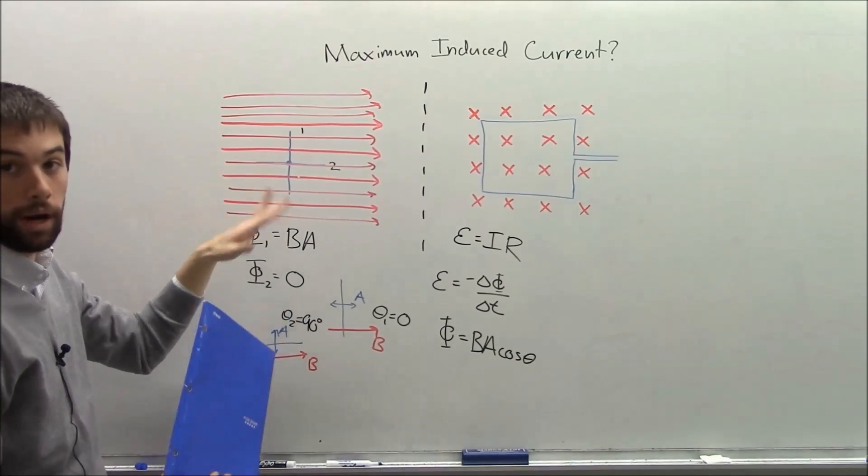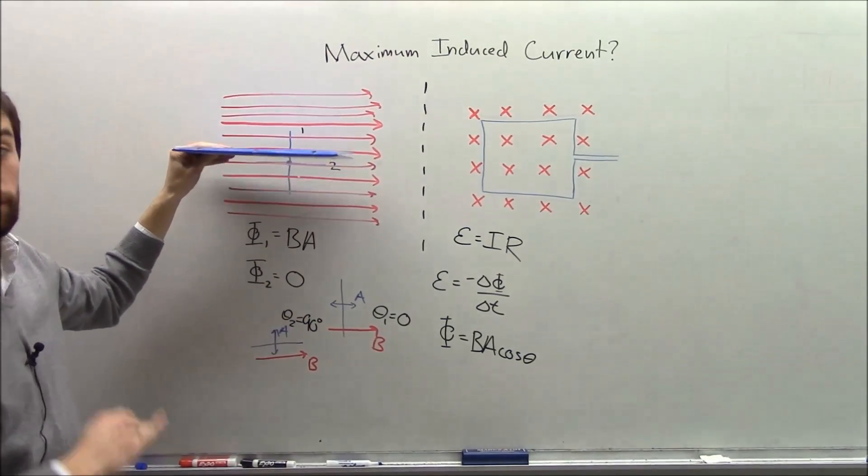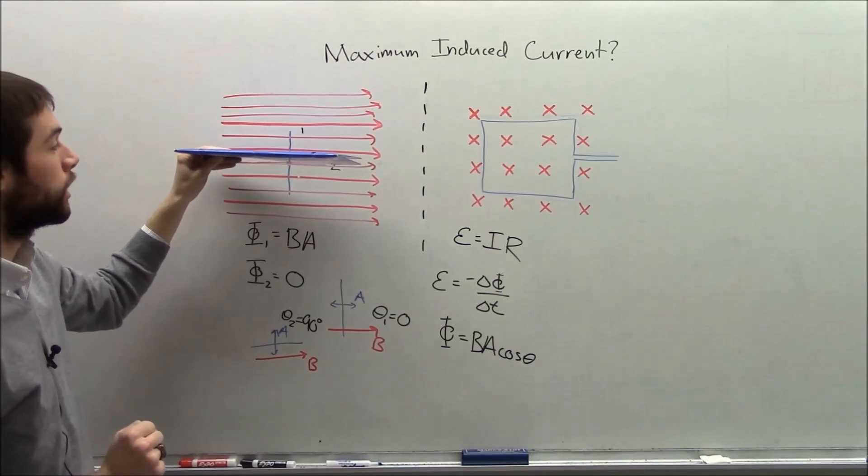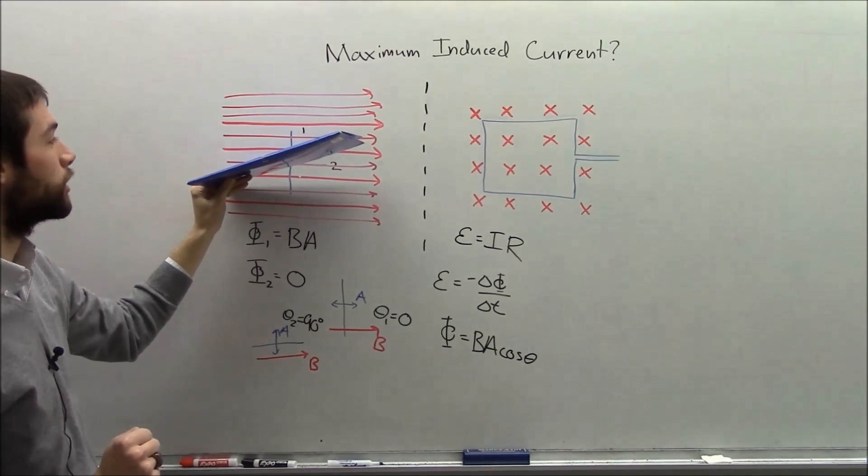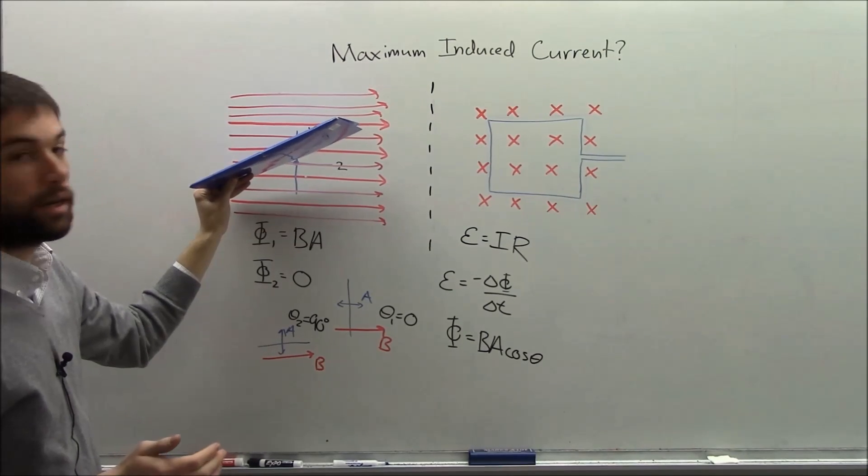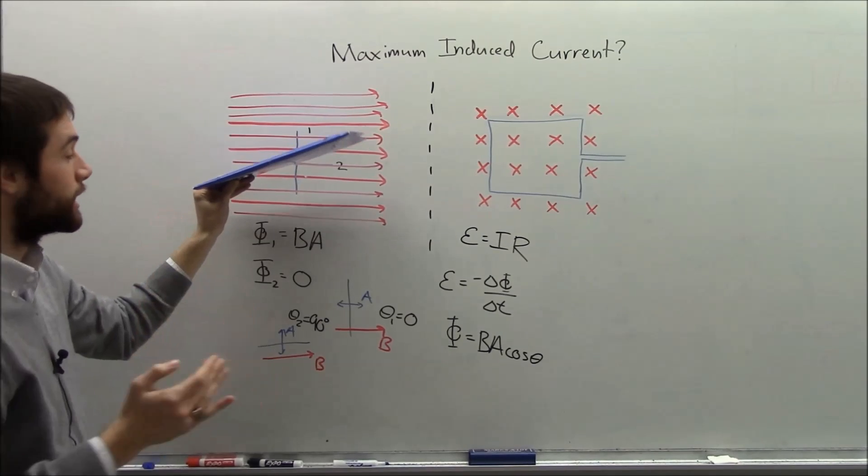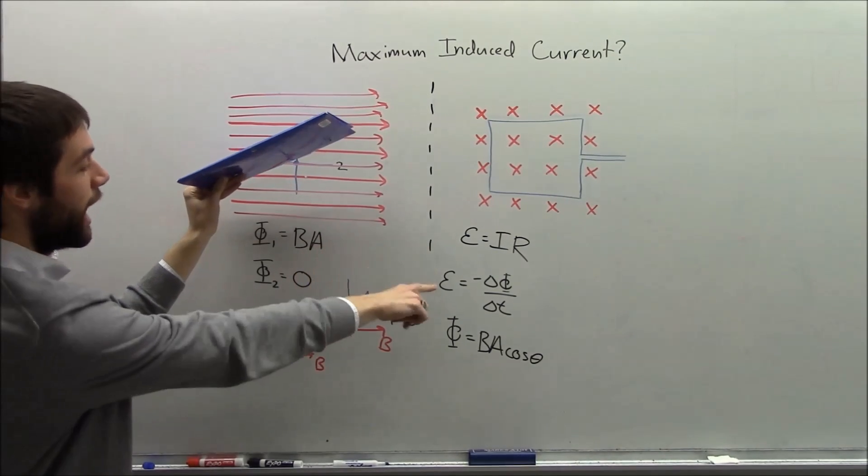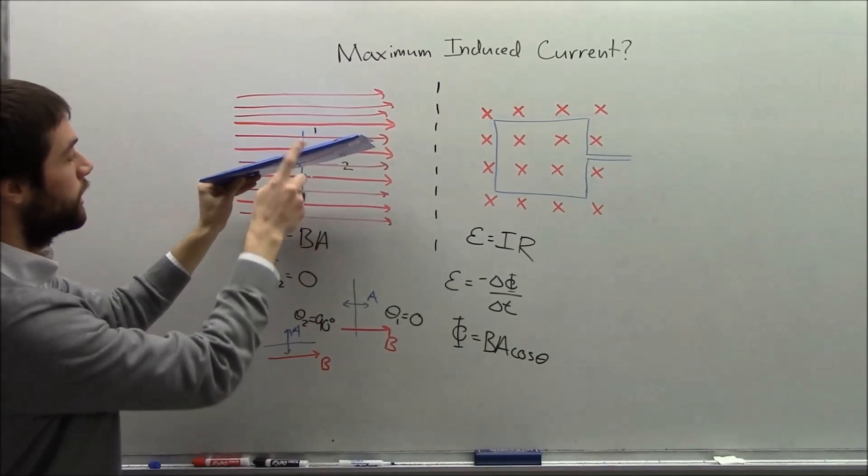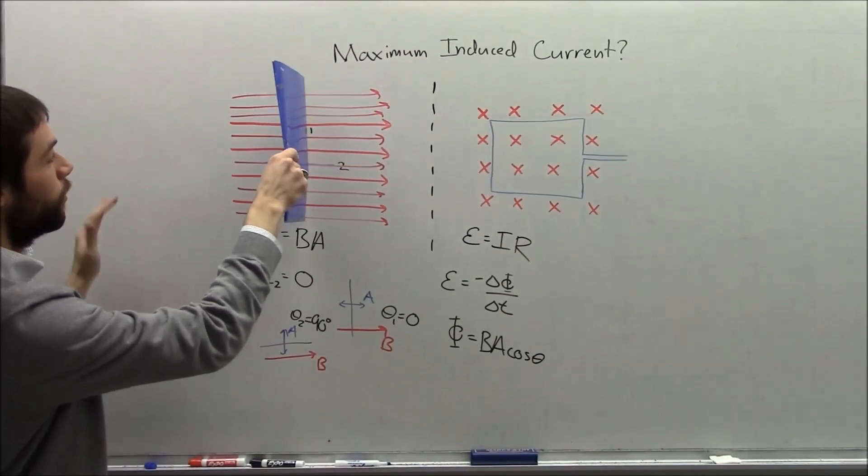That's case one. Now let's look at case two. In case two I start like this, and there's no arrows poking through my loop. If I rotate it by the same angle, you can see I've added five arrows, maybe six arrows. And I've rotated it by the same angle. What that tells me is that I've added more flux to the loop in case two by rotating it by the same amount than I've taken away in case one.